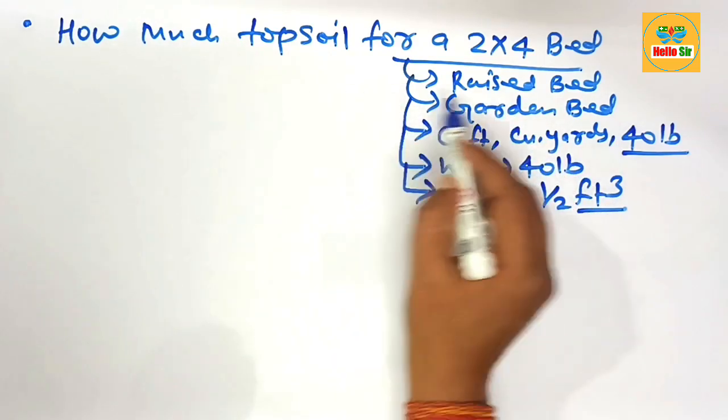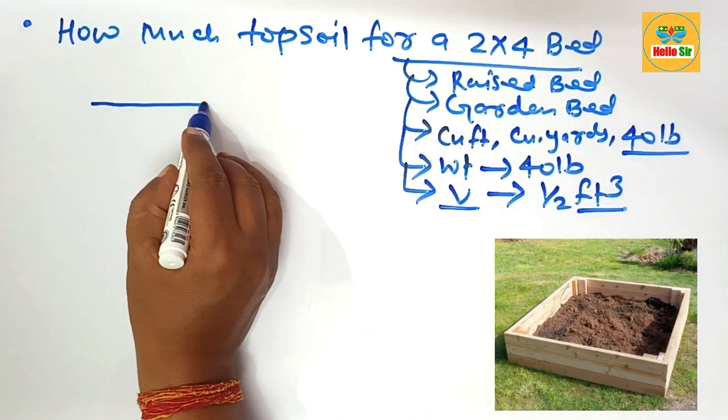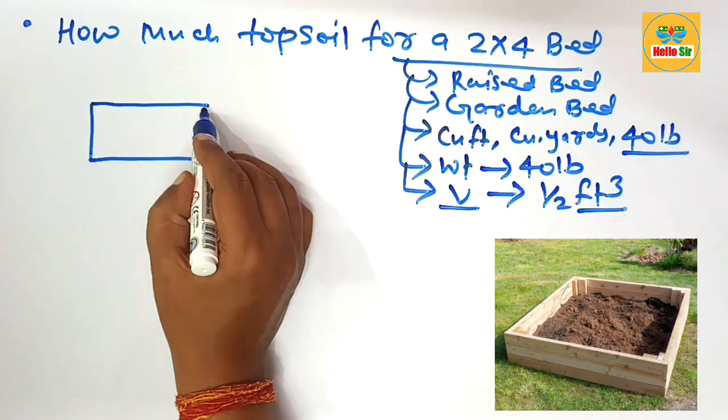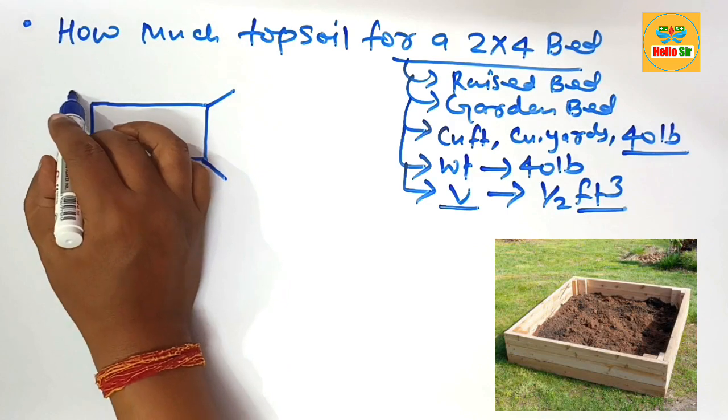First we make the dimensions for the garden bed. The garden bed's outer surrounding area is covered with a wooden frame structure. Suppose this one is the wooden frame.